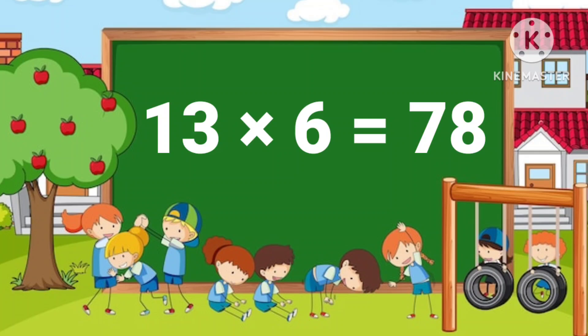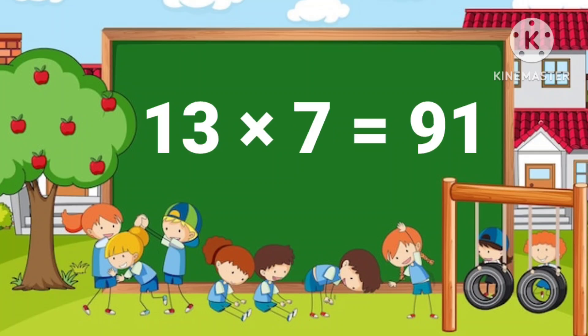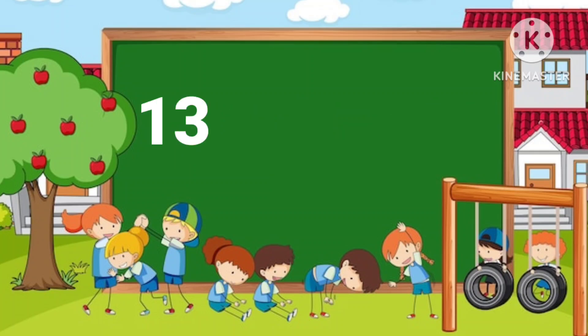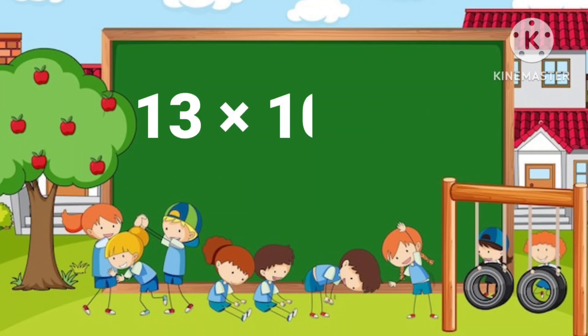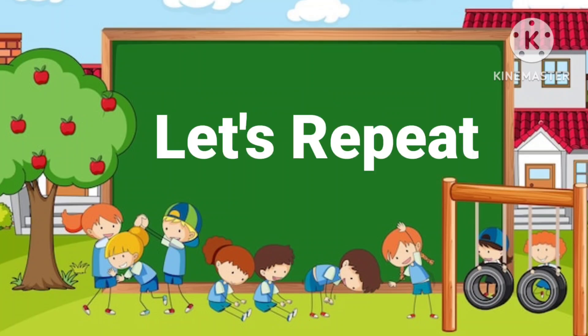78. 13 7's are 91. 13 8's are 104. 13 9's are 117. 13 10's are 130. Now let's repeat the table.